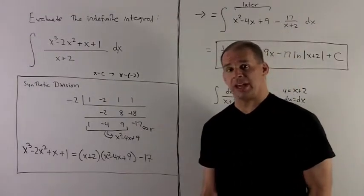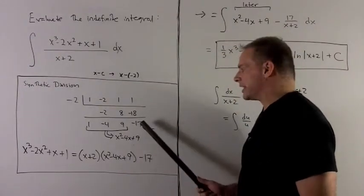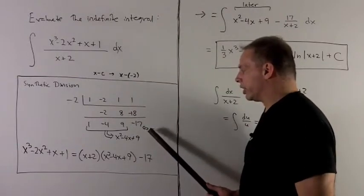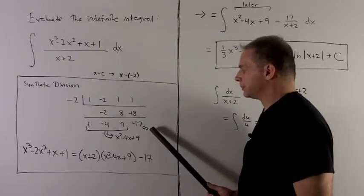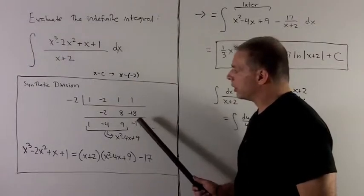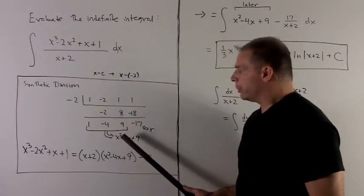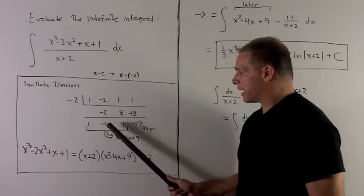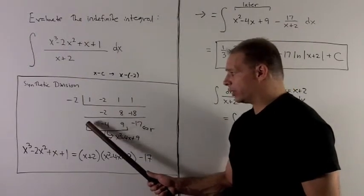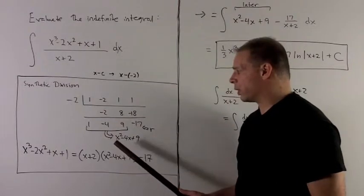And now all I need to do is interpret the answer. The very last number here is the remainder upon long division. The 1 minus 4 and 9 are going to give me a polynomial, x squared minus 4x plus 9. It's going to have to be 1 degree less than the polynomial we started with.